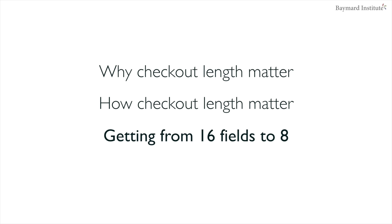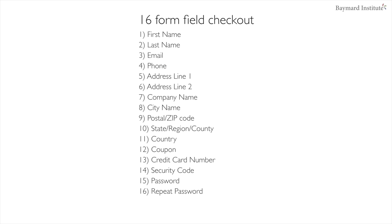Let's try to actually go from 16 fields down to 8 fields. I'll show you our research findings and focus quite a lot on what the underlying user behavior is when users reach certain input types, rather than just showing the solution — because at Baymart we believe it's more important to understand the underlying issue than the exact solution. So let's start with a checkout flow that has 16 form fields: first name, last name, email, phone, address line 1 and 2, company name, city name, postal/zip code, a region indicator (state/county), country, coupon code, credit card number, security code, password, and repeat password.